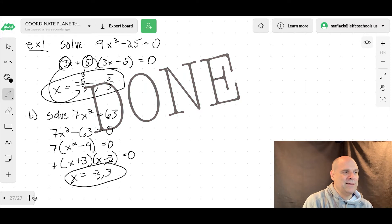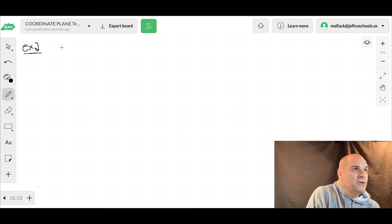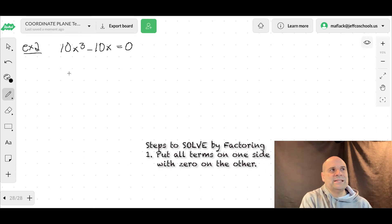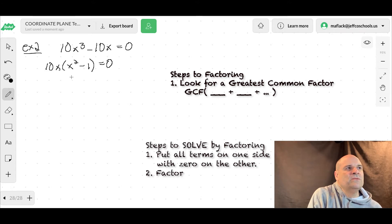All right. Example 2. Moving right along. So this is technically a cubic equation, but it's a lot easier because we can factor some stuff out. All right. So everything's on one side of the equation already. So that's nice. So we're going to take out common factors. So 10 and x you can take out. So x squared minus 1.